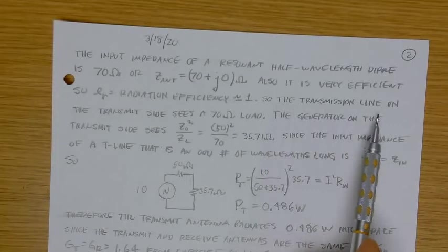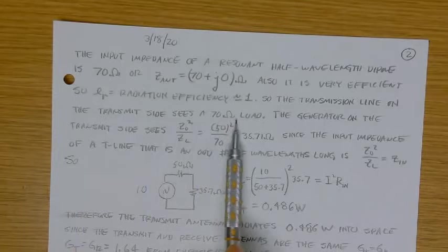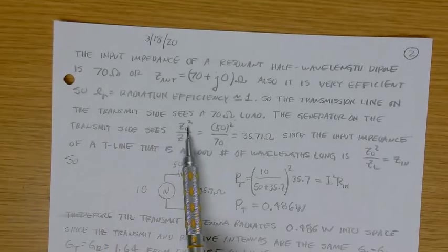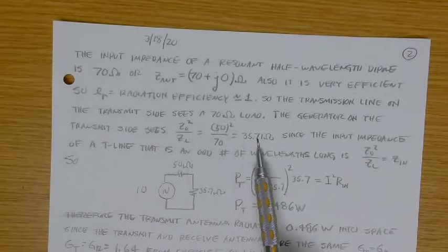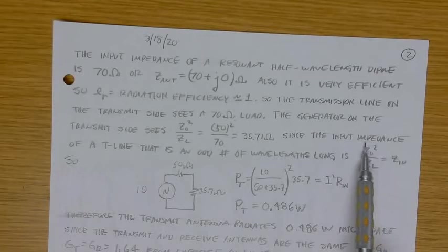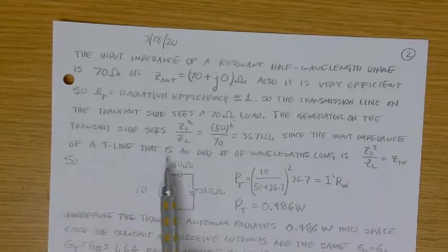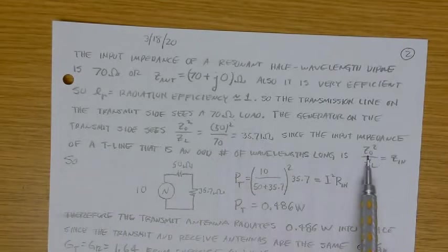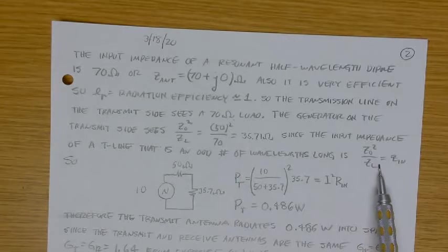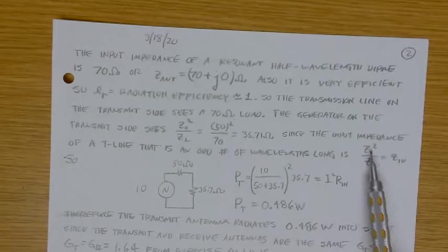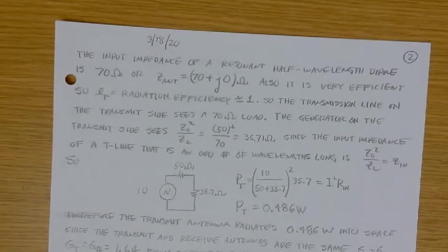All right. So the infinity dipole is 70 ohms, 70 plus j0. And the half-wave dipole, the reason people use it so much is because it's extremely efficient. In other words, almost all of the power fed into the terminals of the resonant antenna is radiated into space. Very little of it is lost as I squared R losses on the antenna. So what we're going to do is just assume this radiation efficiency is unity. That makes its gain equal to its directivity. So the gain is always the radiation efficiency times the directivity.